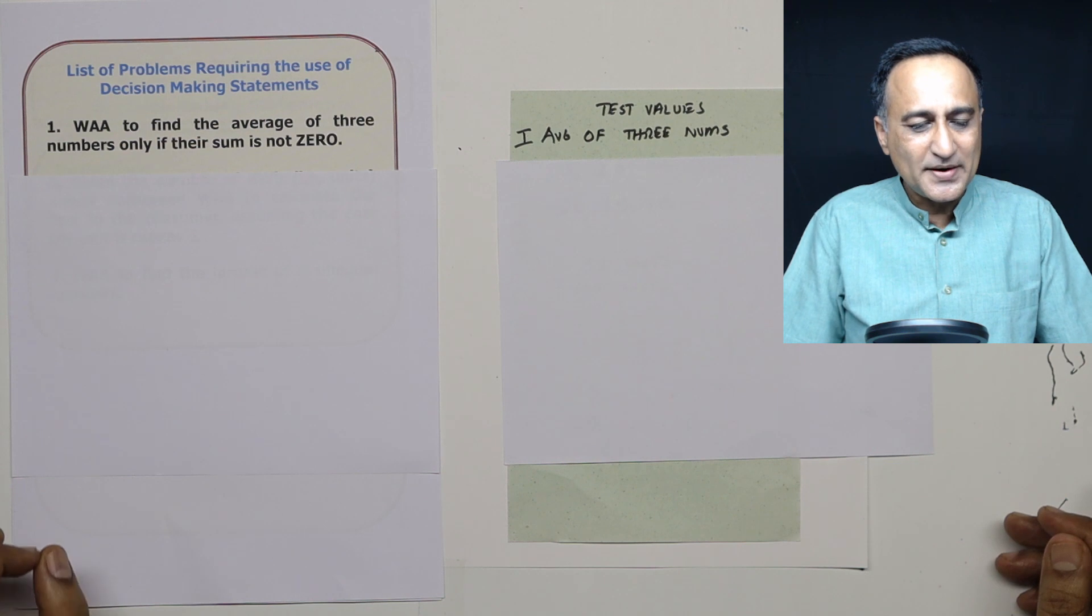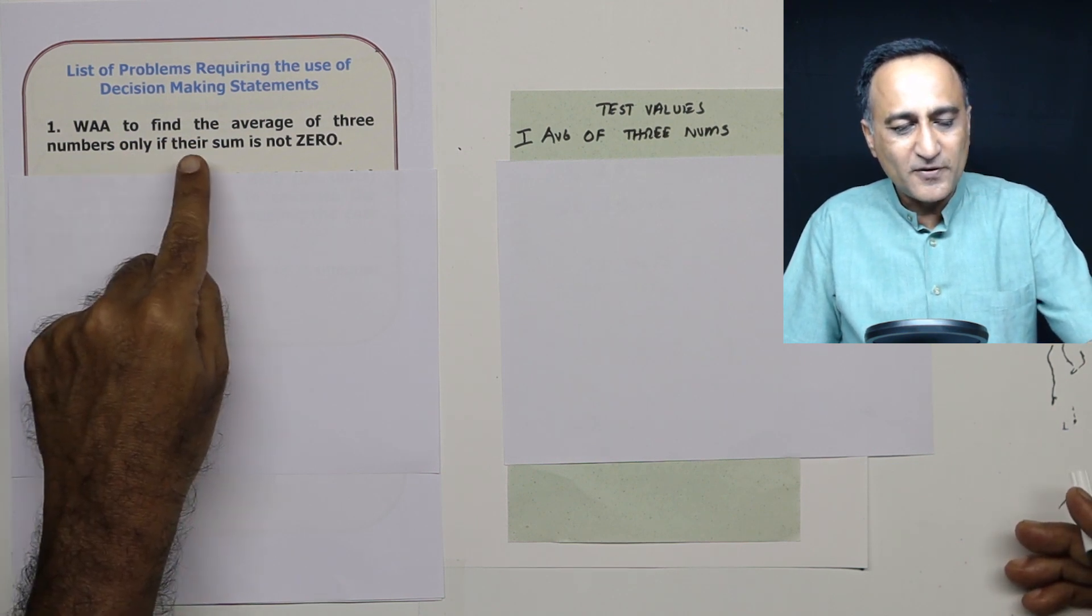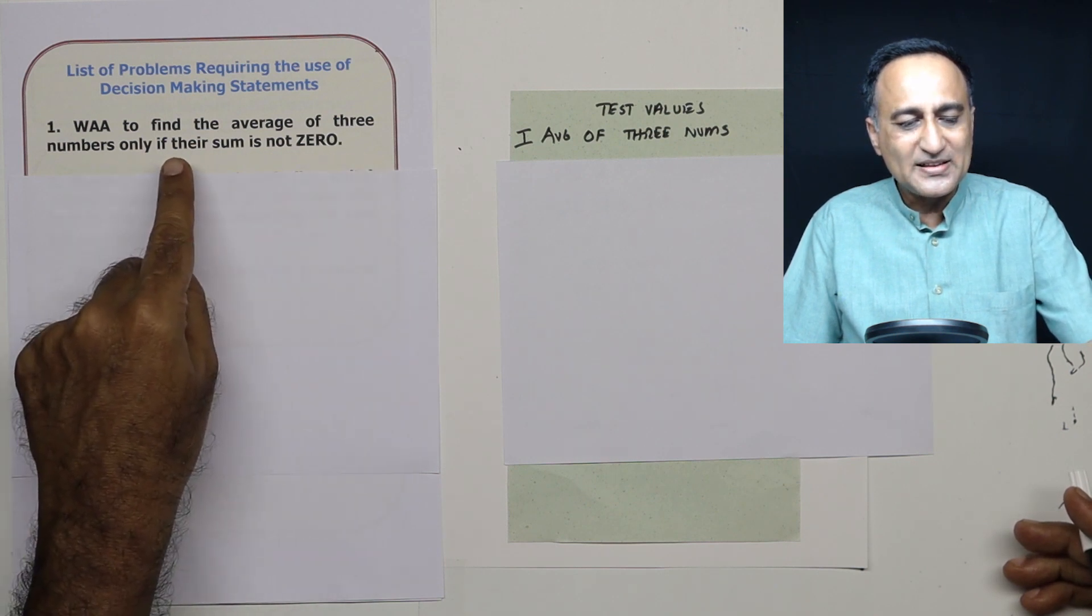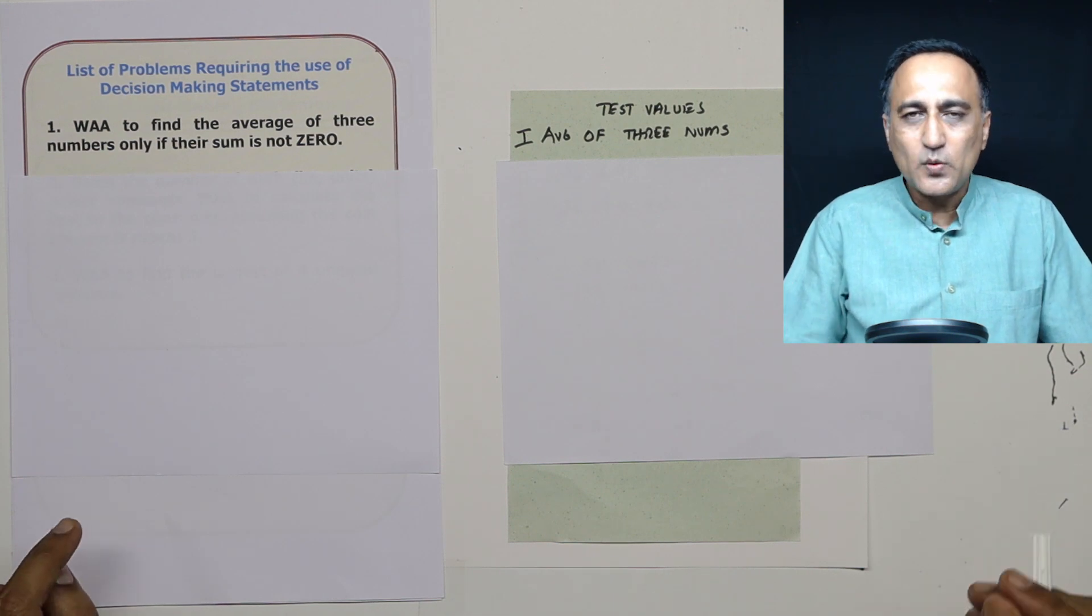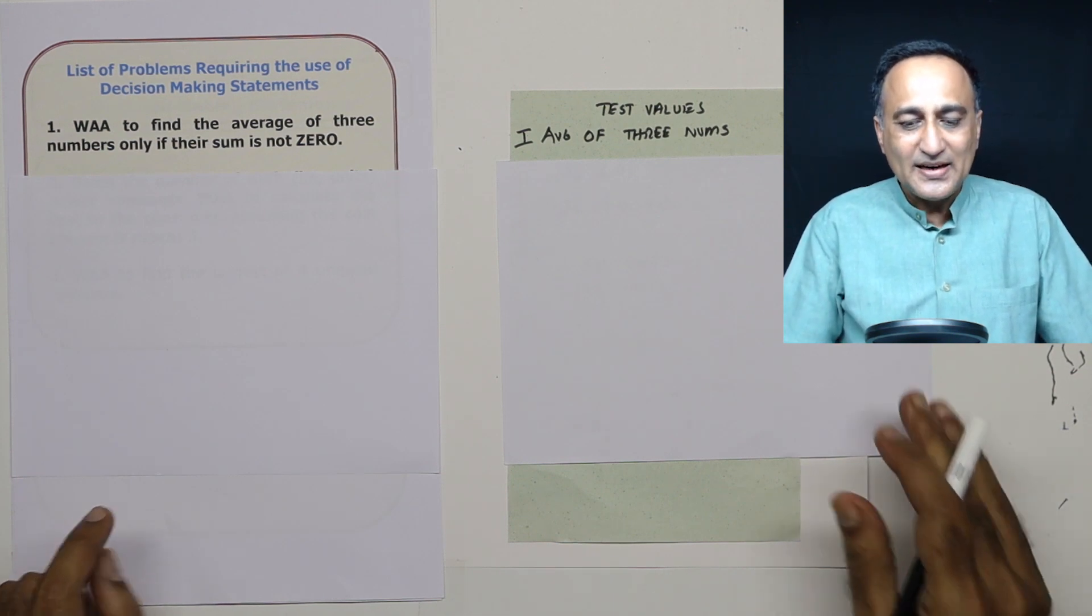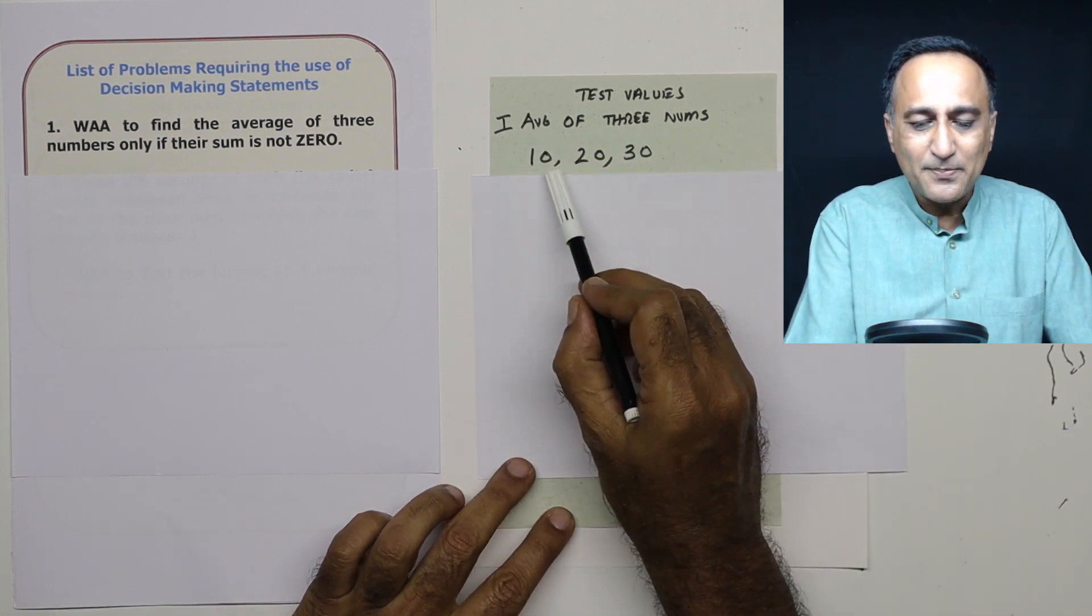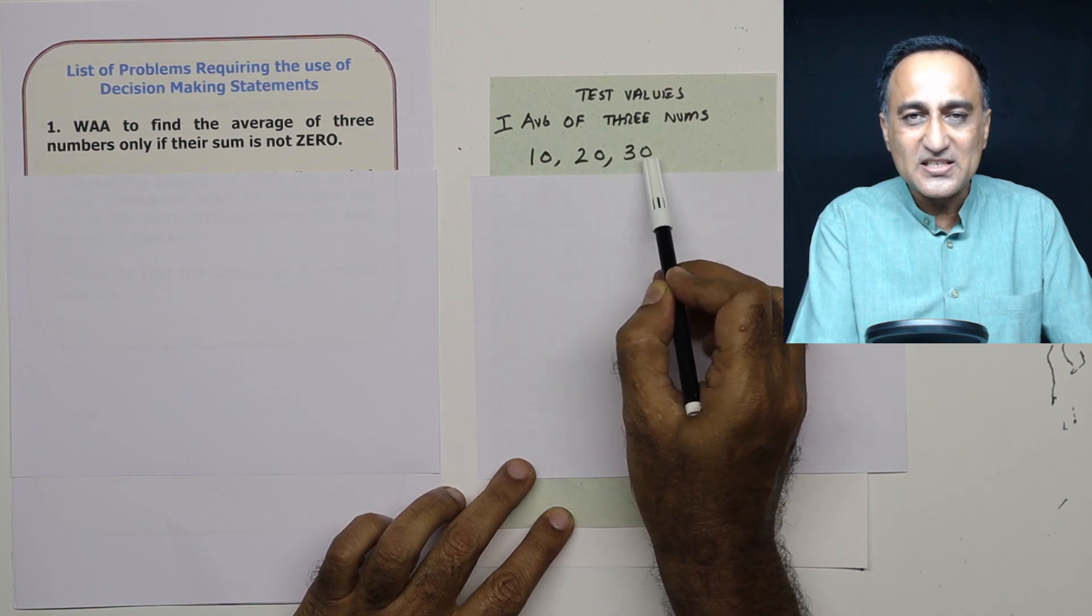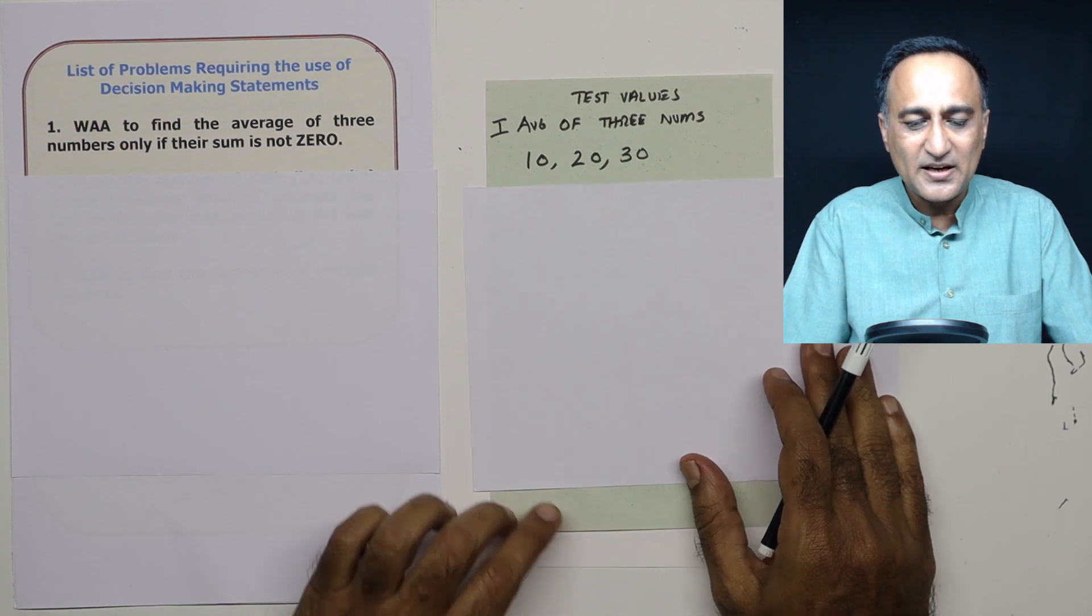The first one is quite simple. It asks you to write an algorithm to find the average of three numbers provided the sum of the three numbers is not zero. So one way to understand a problem, which I believe is the best way, is try to think of certain sample data values. Say, for example, if this was the data value 10, 20 and 30, this would have been 60, 60 divided by 3 would have been 20, the average of three numbers.